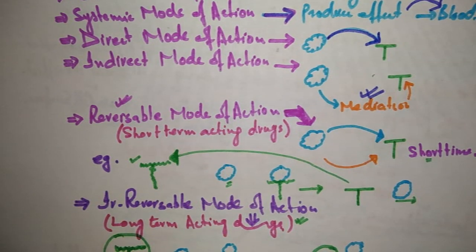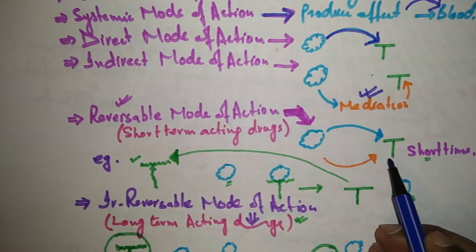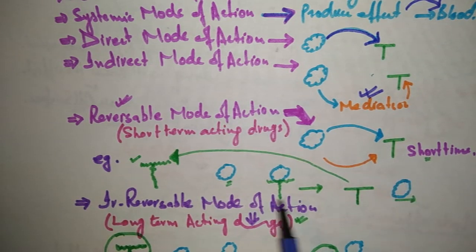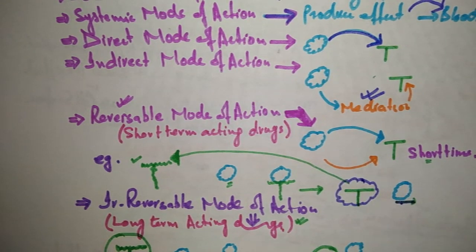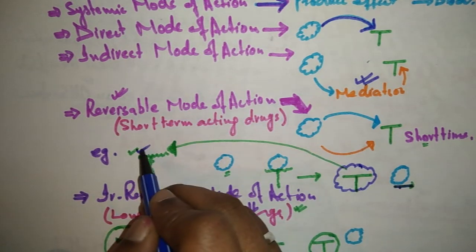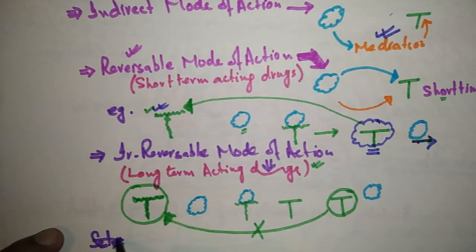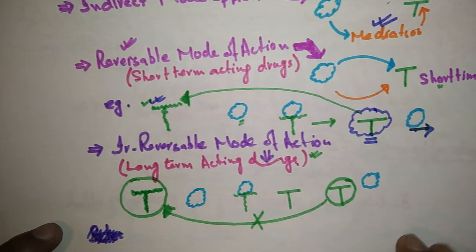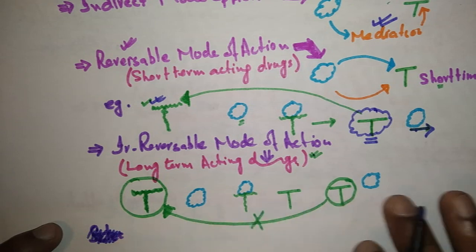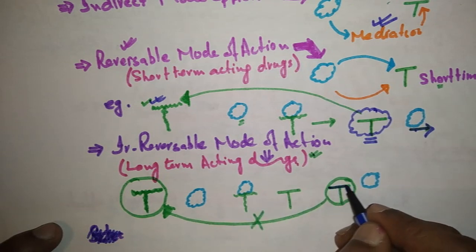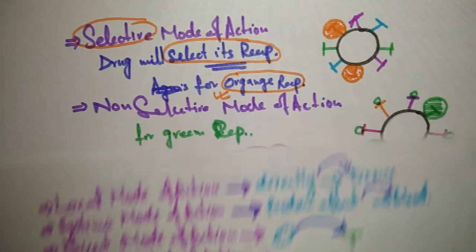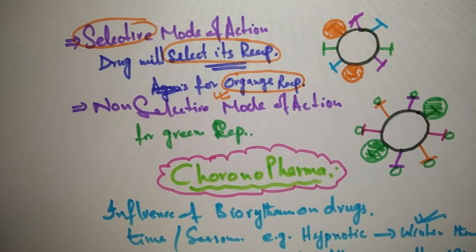Reversible mode of action drugs are also known as short-term acting drugs — the drug affects the receptor for a short time, and when the drug is excreted from the body, the receptor returns to its normal state. Irreversible mode of action is the opposite — these are long-term acting drugs. When the drug is excreted through the body, the effect remains on the receptor.